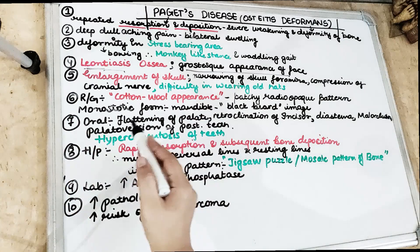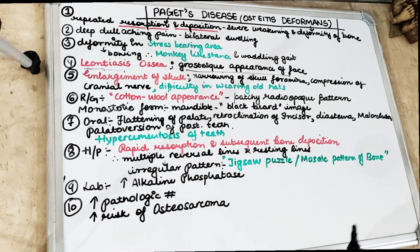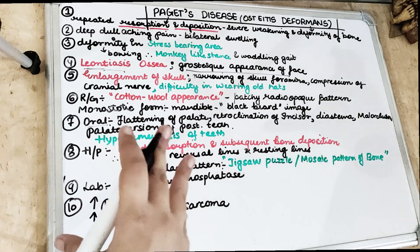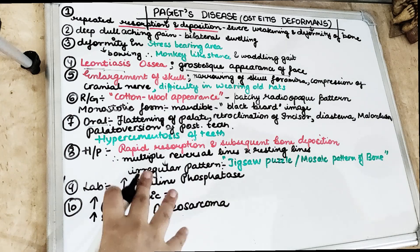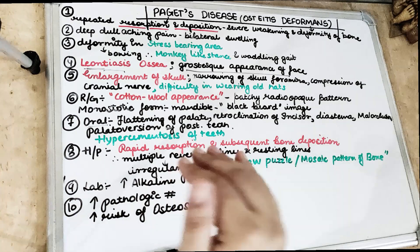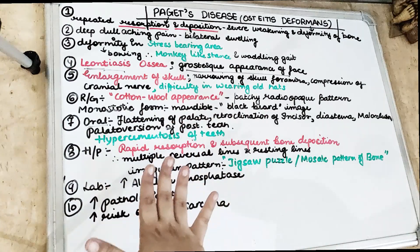Looking at the oral features, we see flattening of the palate, retroclination of the incisors, diastema, malocclusion, and palatoversion of the posterior teeth. The maxilla is more commonly involved in Paget's disease compared to the mandible. The shape of the palate becomes more like a flat shape rather than its normal form.